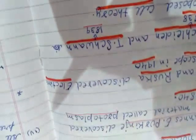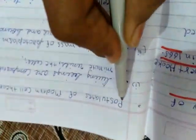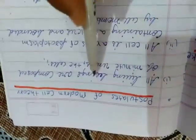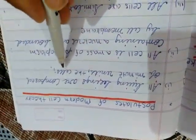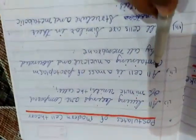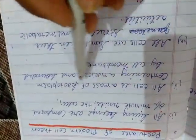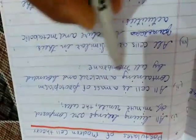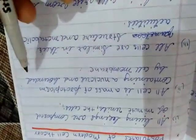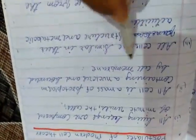Now we will discuss about some postulates of the modern cell theory. The postulates of the modern cell theory are: first, all living beings are composed of minute units called the cell. Second, all cells are a mass of protoplasm containing a nucleus and bounded by a cell membrane.